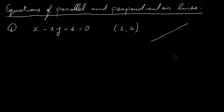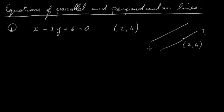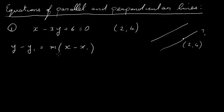Now, the question really is: what's the equation of another line that's parallel to that line? We know the equation of this line here. We want to know the equation of another line that passes through the point (2, 4). So I need to find the equation of that line.